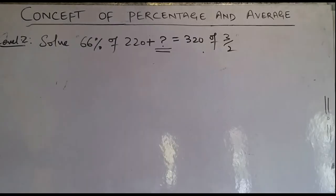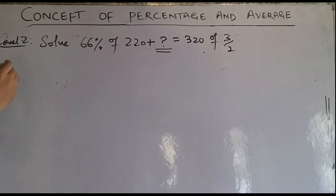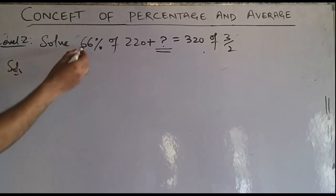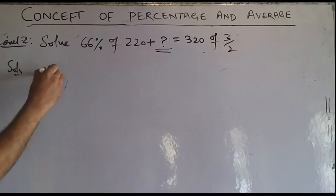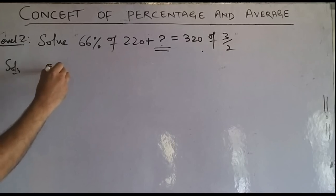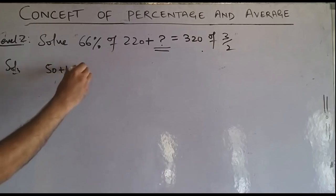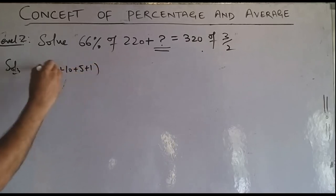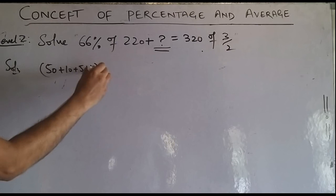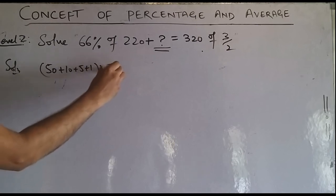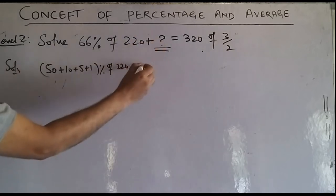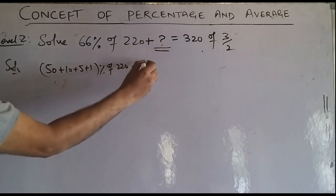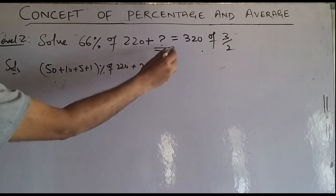Another question: if 66% of 200 gives the total amount, split as 50 + 10 + 5 + 1 percent of 200 to find the answer.